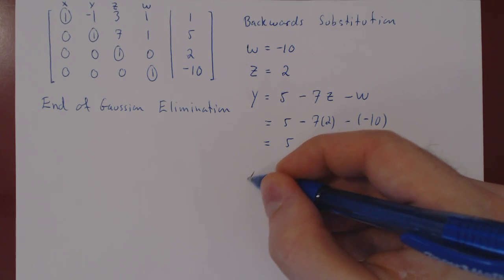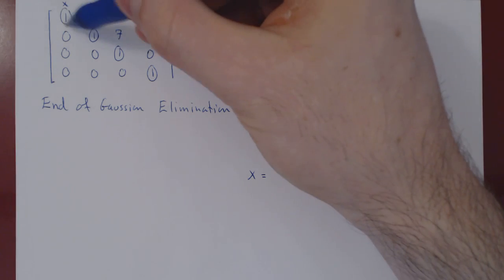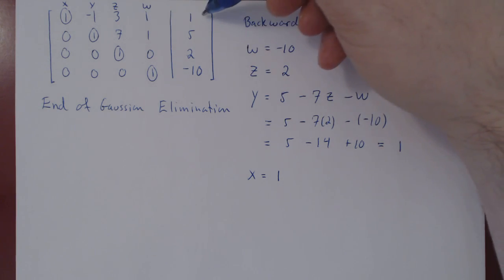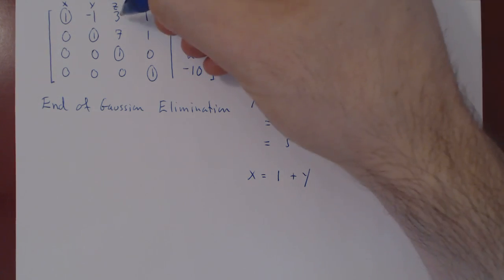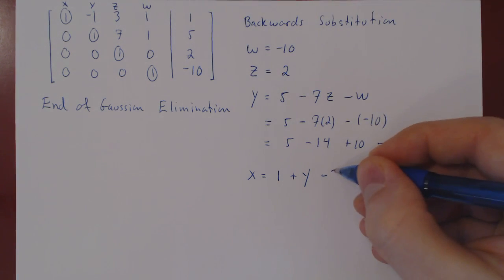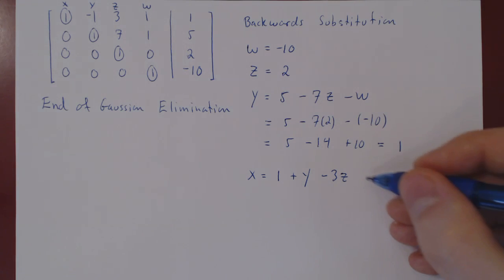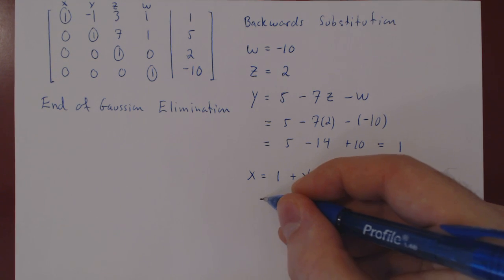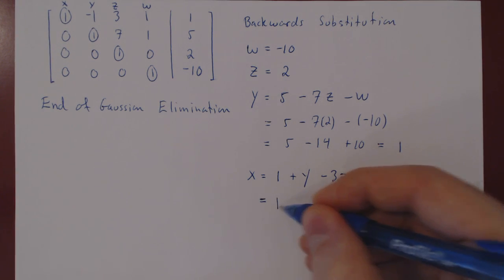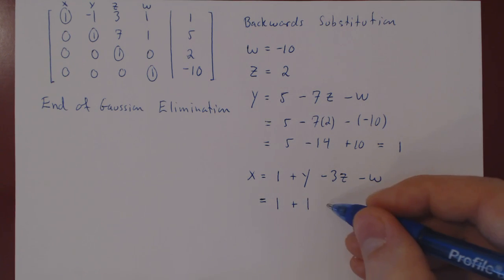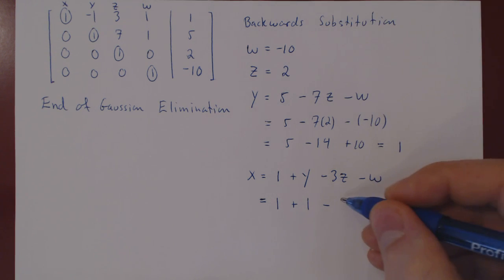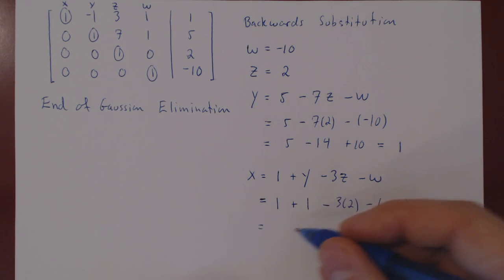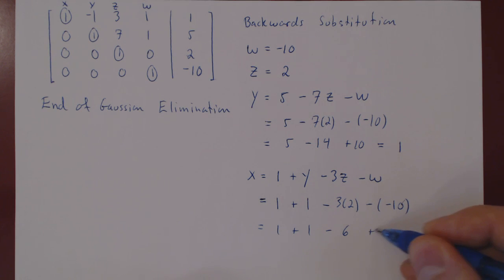5 - 14 + 10: negative fourteen plus ten is negative four, plus five gives positive one. So y = 1. Moving up one more row to solve for x: x equals 1 plus y minus 3z minus w = 1 + 1 - 3×2 - (-10) = 1 + 1 - 6 + 10.